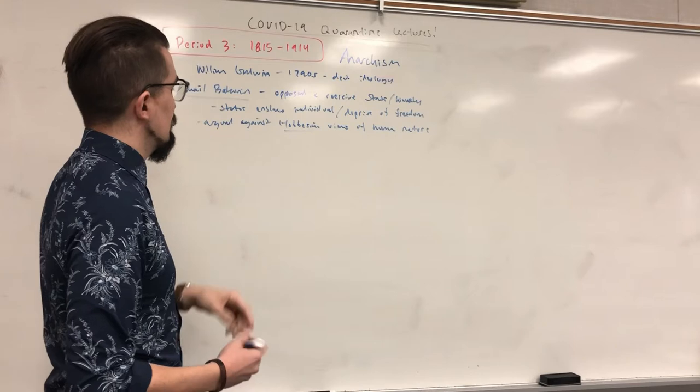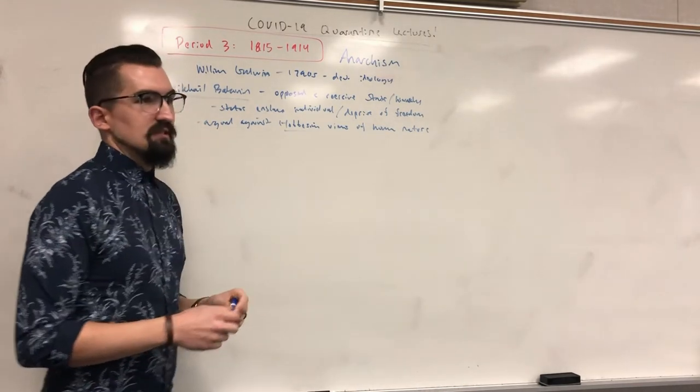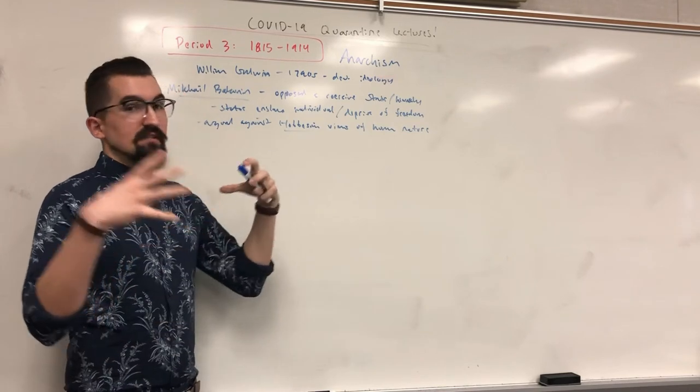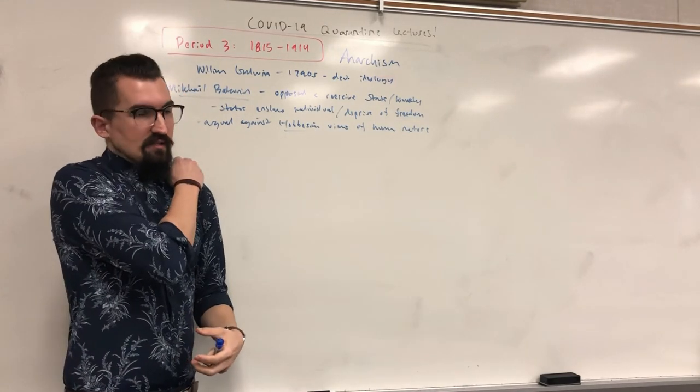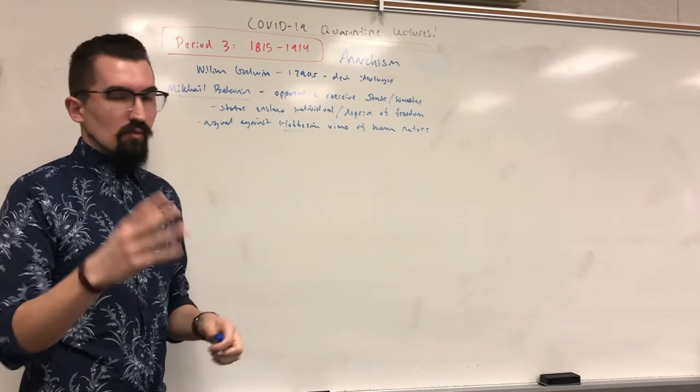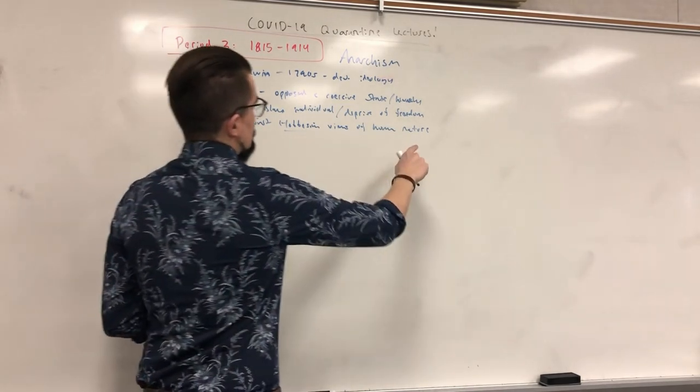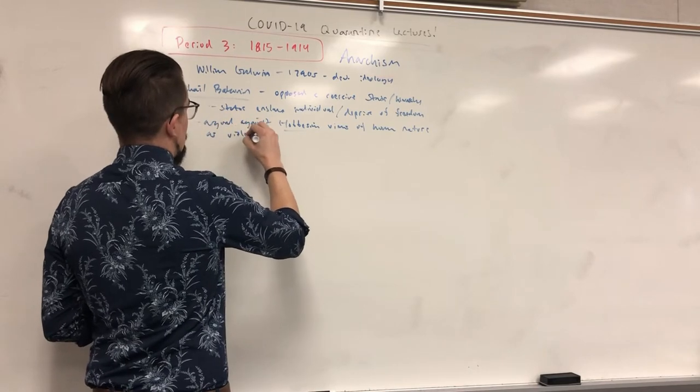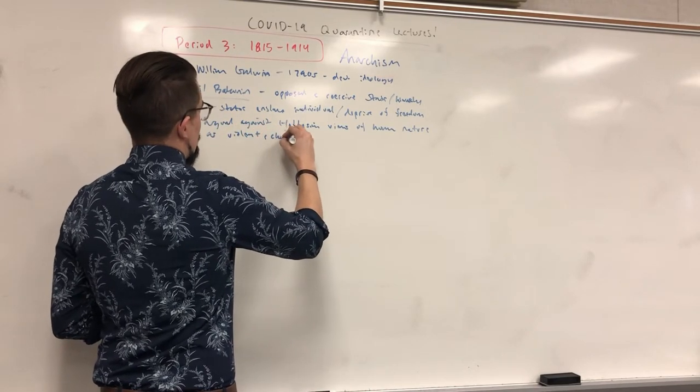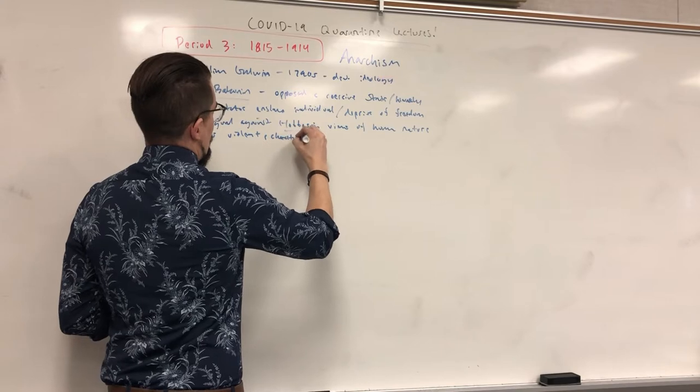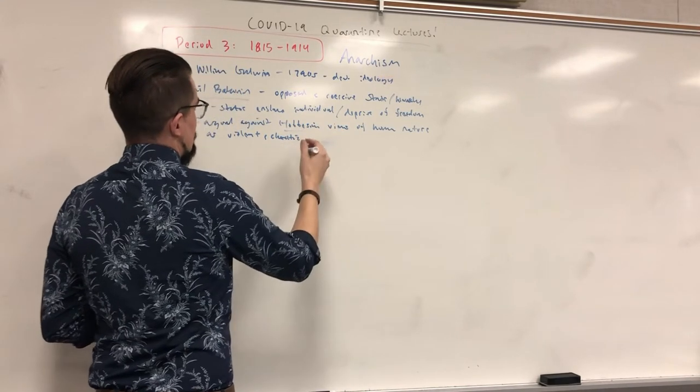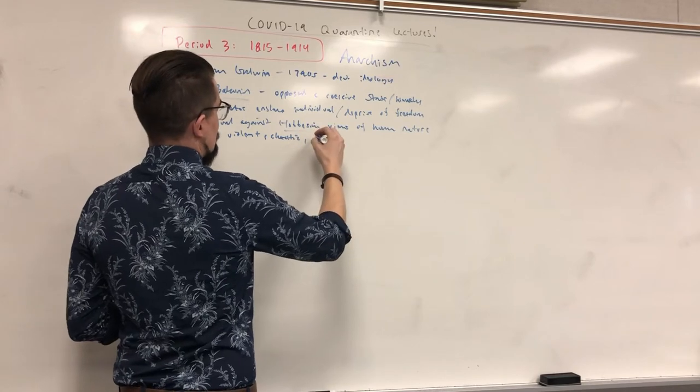But Bakunin argued that this was a lie. I'm not sure that he necessarily thought Hobbes in particular knew what he was lying about, but he believed at least the idea of the necessity for a state system and this idea of human nature was incorrect. So he was against this view of human nature as violent, chaotic, uncivilized. Well, that's what he's arguing, that they are uncivilized. Violent, chaotic, dangerous.